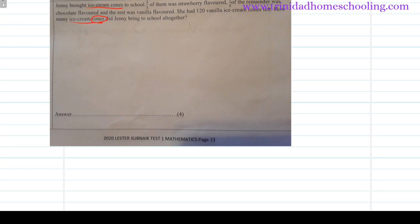So our whole is represented by one bar, which we will call cones. Now let's look at how many parts this whole amount of cones is split into. The first thing they said is two-thirds of them was strawberry flavored, so we have strawberry. I'm going to put S for strawberry.